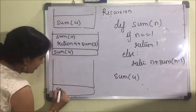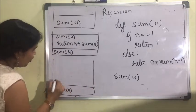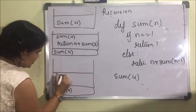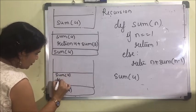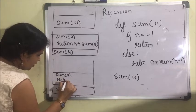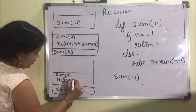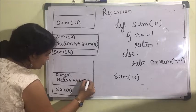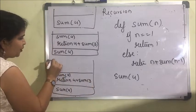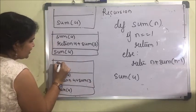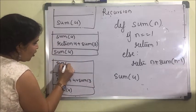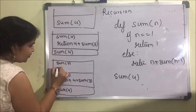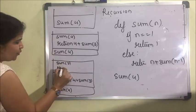...sum(4) will be as it is: return 4 plus sum(3), and one more frame is added — sum(3). It is again not equal to 1, so it will return 3 plus sum(3 minus 1), that is sum(2).